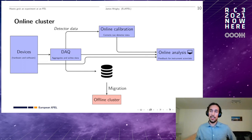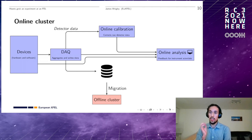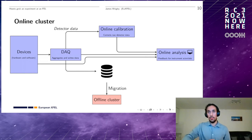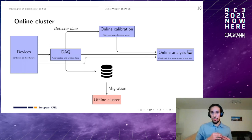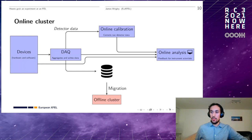The last part of the diagram I want to discuss is migration. The storage on the online cluster is not meant for long-term use — it's just there for data being saved during an experiment. There is a separate environment called the offline cluster used for long-term data storage and any rigorous final analysis. The migration process copies all data from the online cluster to the offline cluster, where it becomes accessible for scientists to analyze.